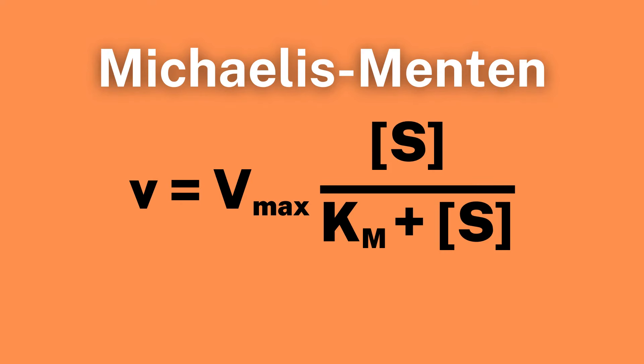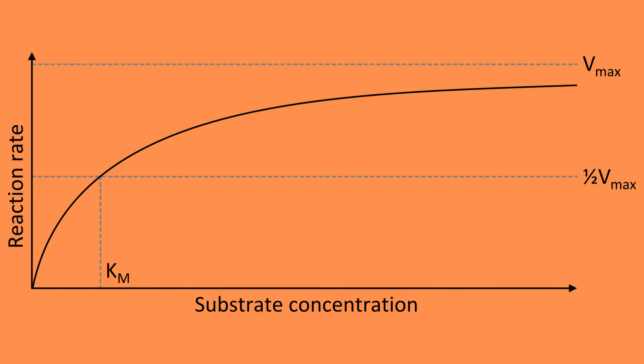The Michaelis-Menten equation is a mathematical model that describes the rate at which an enzyme catalyzes a chemical reaction. It is based on the idea that enzymes work by binding to their substrate, the chemical that they are acting on, and then converting it into a product.